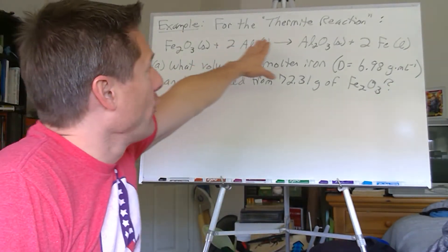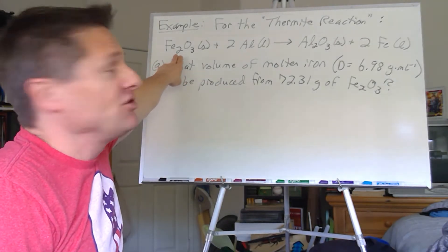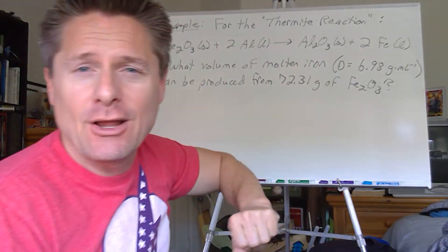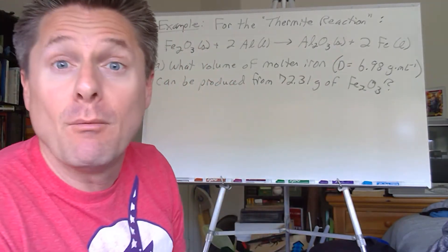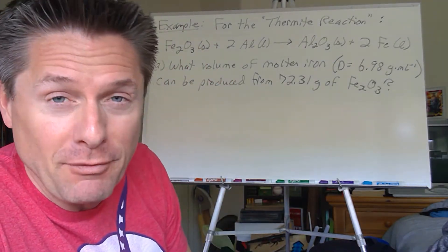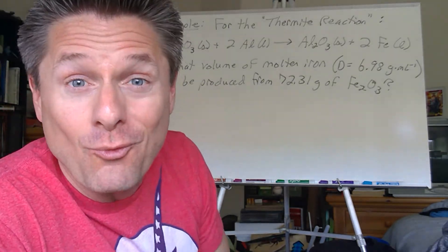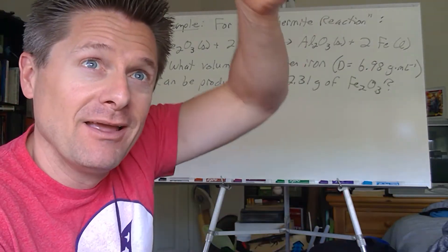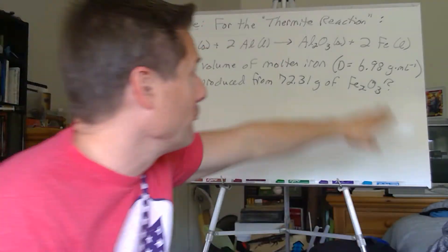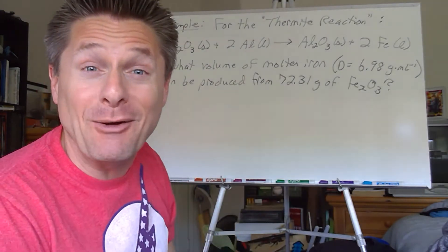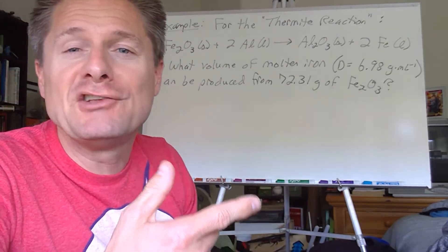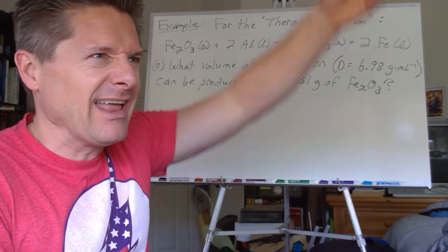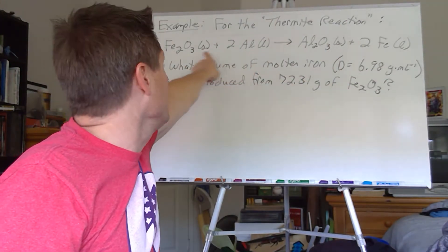Write this down for me. For the thermite reaction, Fe2O3 solid plus two liquid aluminum giving us aluminum oxide Al2O3 solid plus two moles of molten or liquid iron. That's called the thermite reaction. I saw somebody on video did it on top of a car engine and it melted right through, that molten iron was so hot. When I first started teaching, one of the professors did this demo. They had this big thick crucible and they mixed these species, heated it up and liquefied the aluminum and then it just...